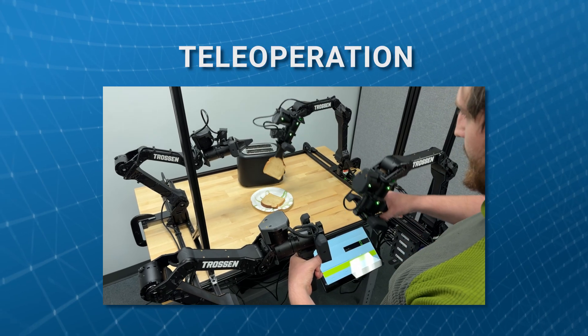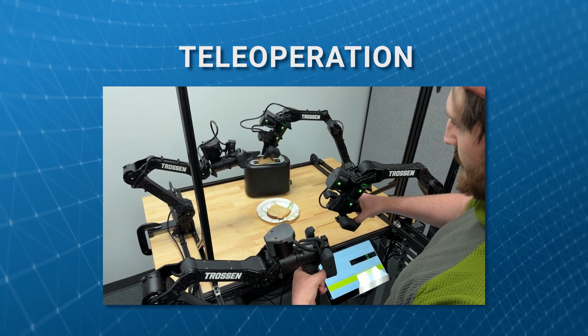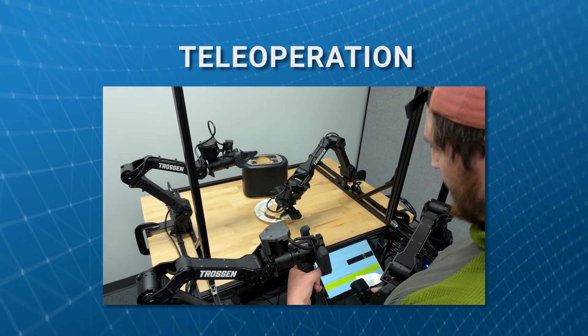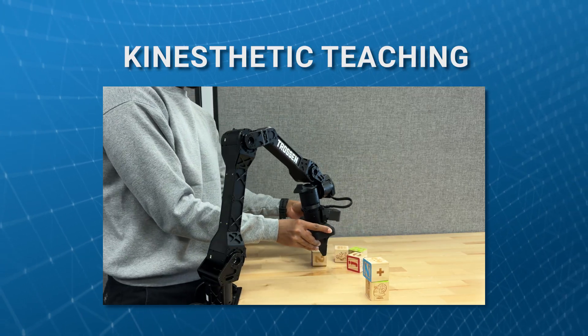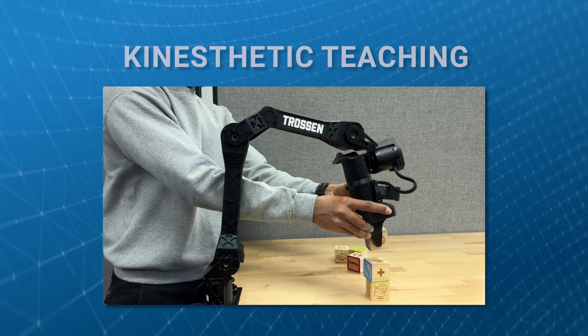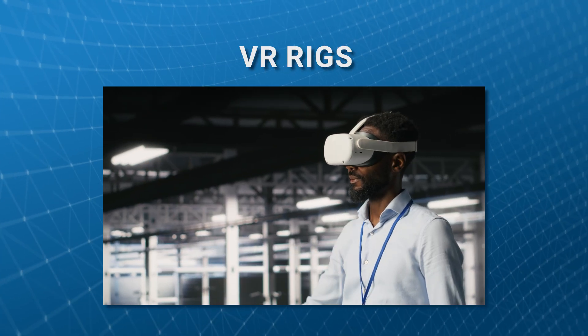There are a few common ways researchers collect robot data. Teleoperation: you control the robot remotely, like a video game, with some sort of input device. Kinesthetic teaching: you physically guide the robot's arm and it records what you did to it. VR rigs: you use controllers to move the robot in a virtual environment.